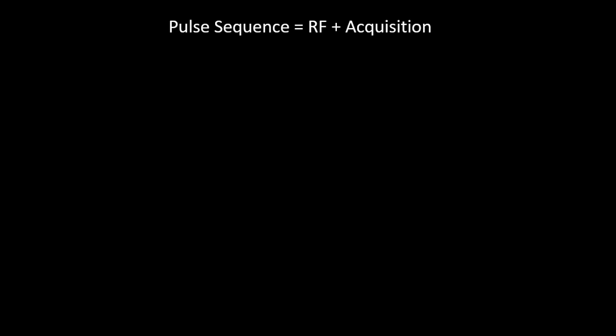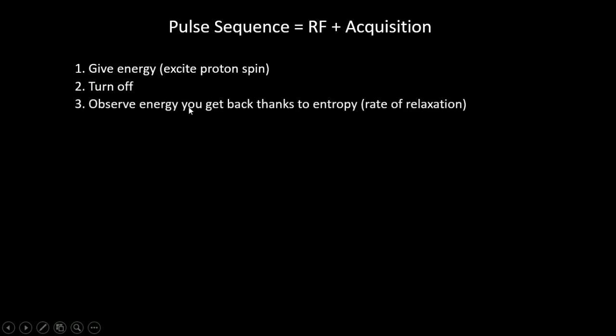What am I talking about when I say pulse sequence? An MRI sequence is basically a sequence of events that happens inside the MRI machine that gives you your image. Each pulse sequence consists of two basic components: your radio frequency component and your acquisition phase. First, we give energy to our system or tissue — we excite proton spins using radio frequency energy. Next, we turn off that source of energy, and finally we observe the energy we get back from that excited tissue due to relaxation of the proton spins back into alignment with the magnet. The differences in rates of relaxation of protons in different tissues give us our contrast.